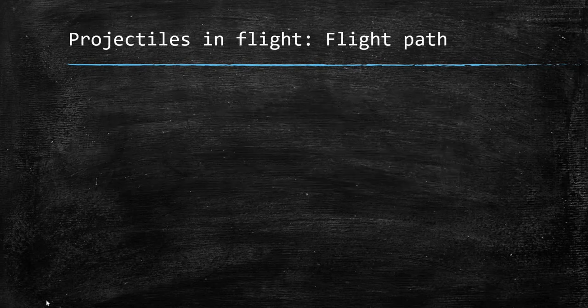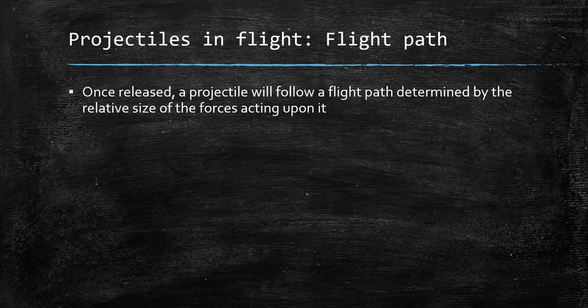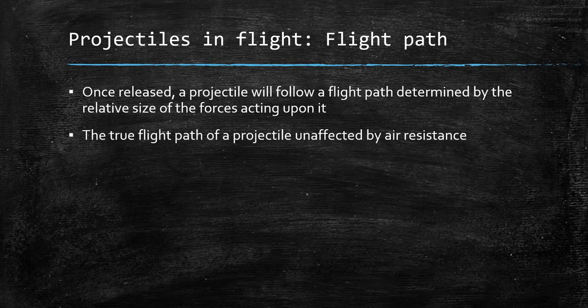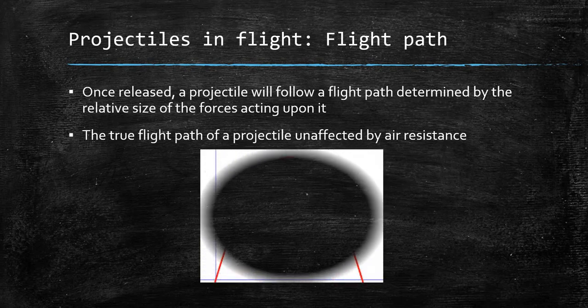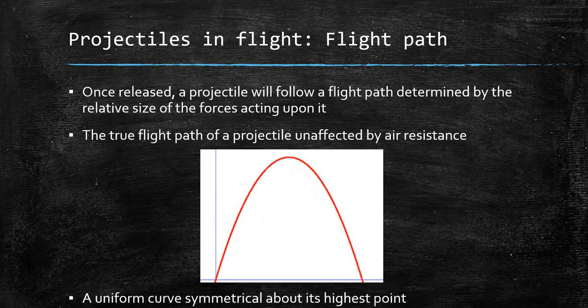Looking at flight paths — projectiles in flight. Once released, a projectile will follow a flight path determined by the relative size of the forces acting upon it. A true flight path of a projectile completely unaffected by air resistance would be parabolic, meaning it is a uniform curve that is symmetrical about its highest point. That's known as a parabolic flight path.